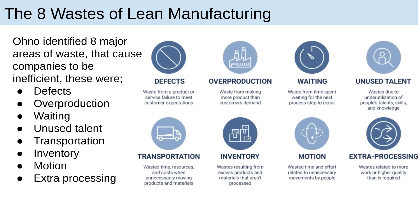The eight wastes of lean manufacturing: Ohno developed eight major areas of waste that caused companies to be inefficient. These were: Defects — faulty products. Overproduction — waste from making more product than customers demand. Waiting — time spent waiting for the next process.